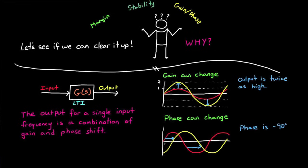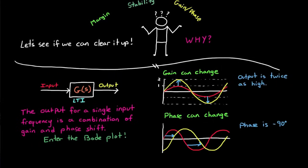So the output for a single input frequency is a combination of gain and phase shift. But here's the thing, the gain and phase can be different at different frequencies, and they usually are. And this is exactly what a Bode plot shows you. It shows you the gain and phase of a system across the entire frequency spectrum. So when we're talking about how much gain and phase margin we have, we need to consider all of the frequencies. And that's one of the reasons Bode plots are so popular for this.